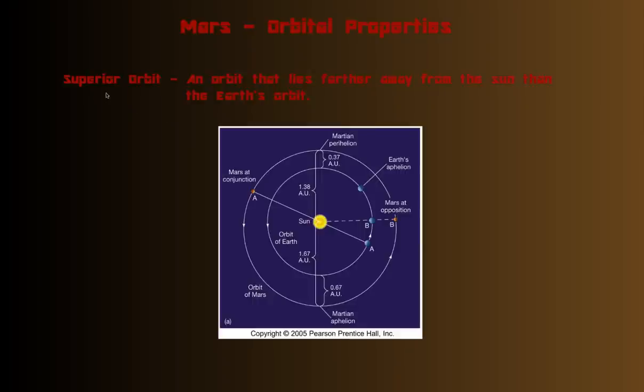And the first one is superior orbit. Earth is the third planet from the Sun, which means there's two closer planets, and they have what's considered inferior orbits. All the planets that are farther from the Sun than our planet are considered to have superior orbits. So, superior orbit is an orbit that lies farther away from the Sun than the Earth's orbit.